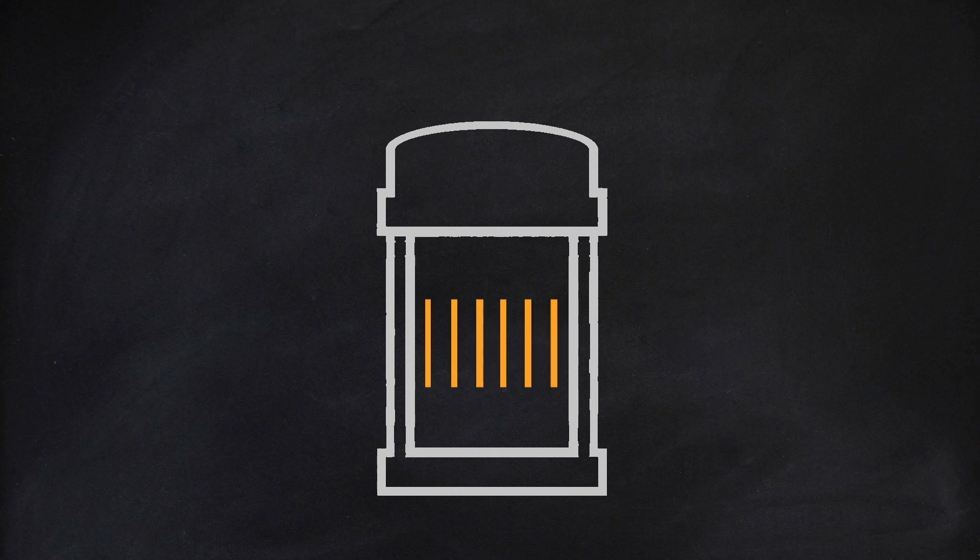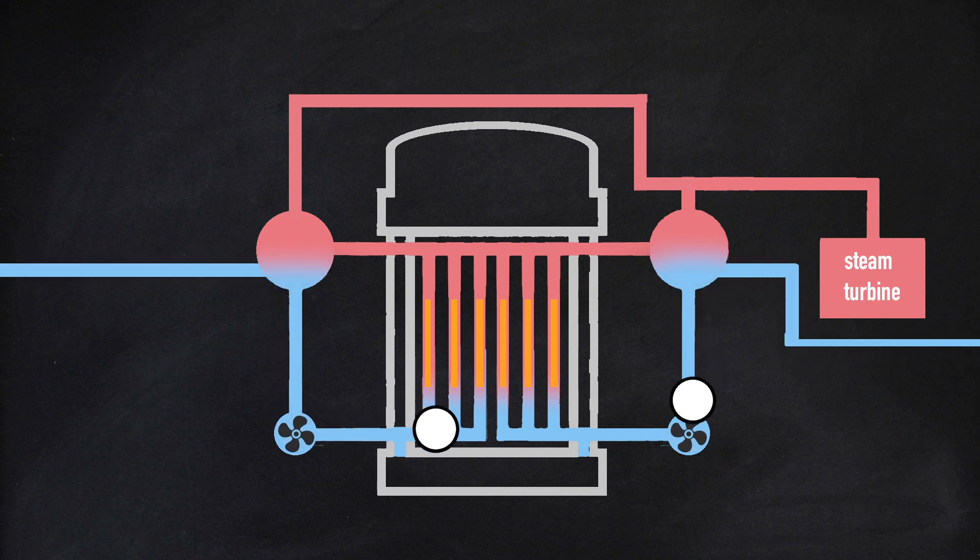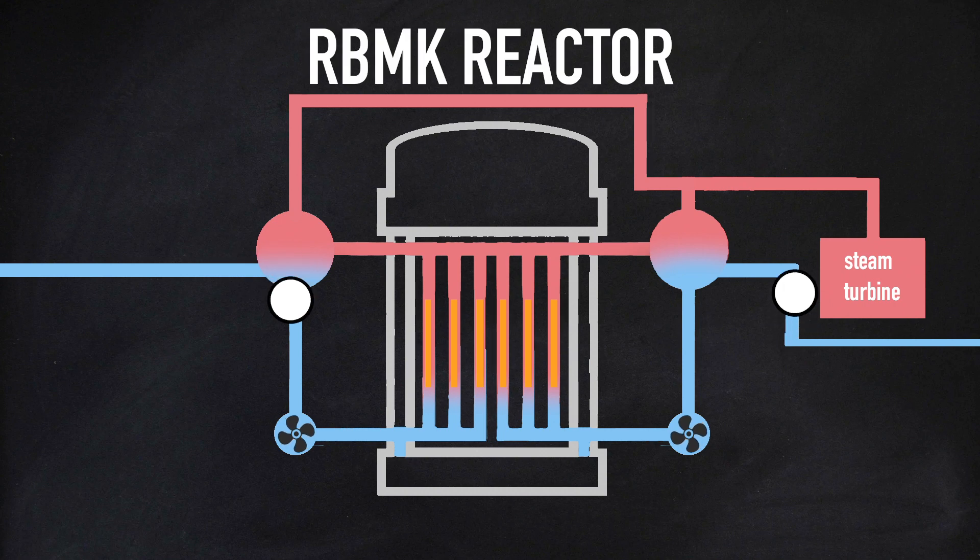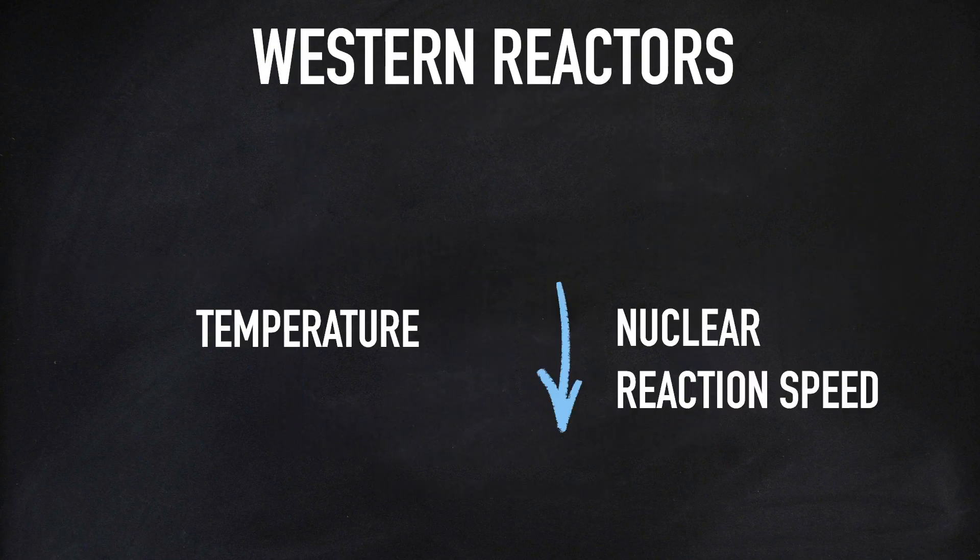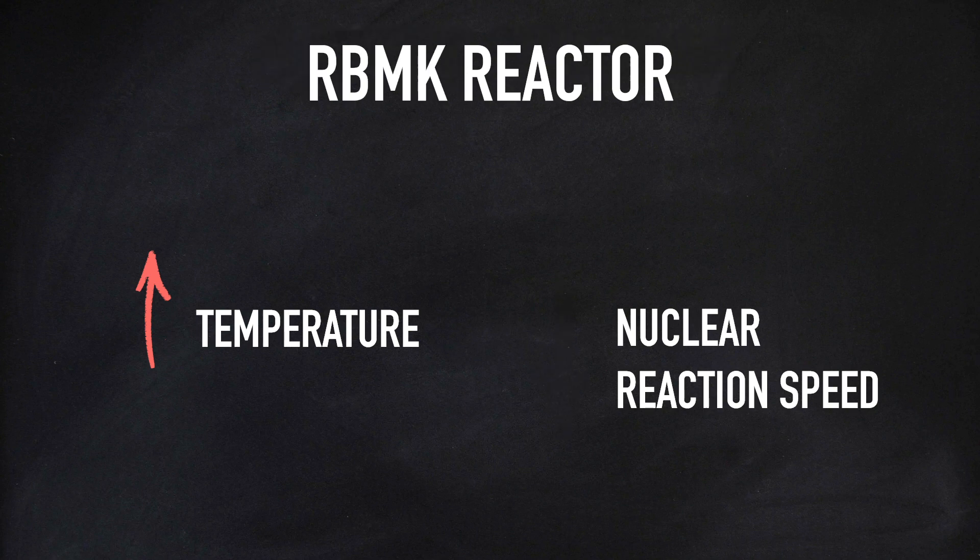Nuclear reactors work by using radioactive fuel to generate heat. This heat then converts water into steam, which is used to spin a turbine, outputting electricity. Chernobyl Reactor 4 was a Soviet RBMK reactor. Unlike Western reactors, which slow down the reaction as temperature rises, increasing the temperature in an RBMK reactor causes the nuclear reaction to speed up. This in turn increases the temperature, which then further increases the reaction speed, creating a feedback loop that can quickly get out of control.